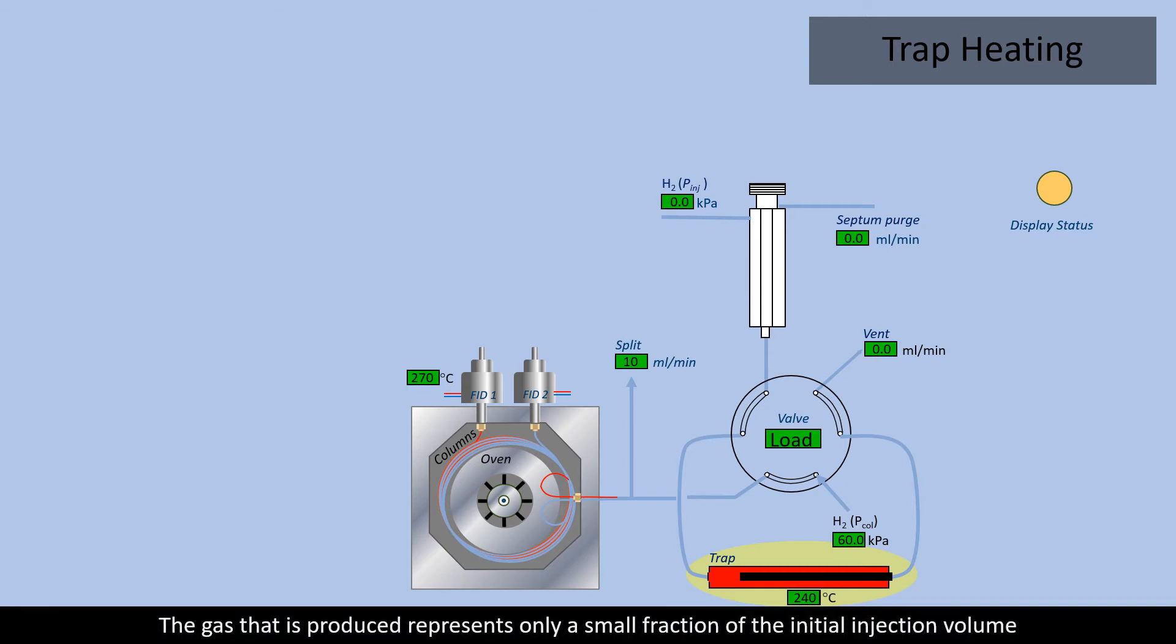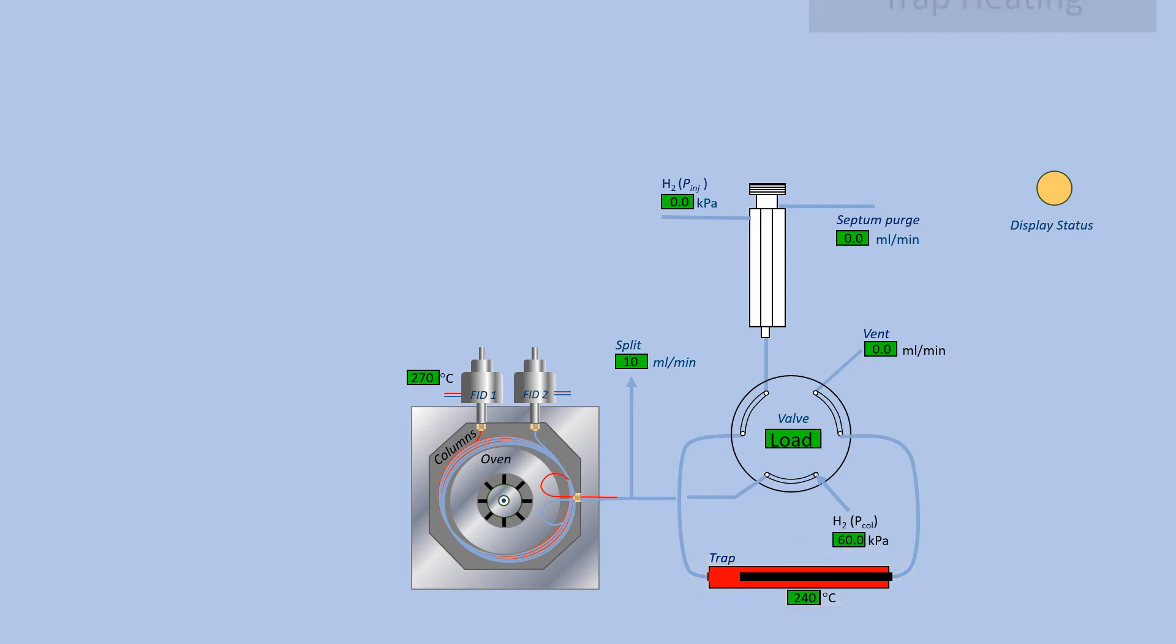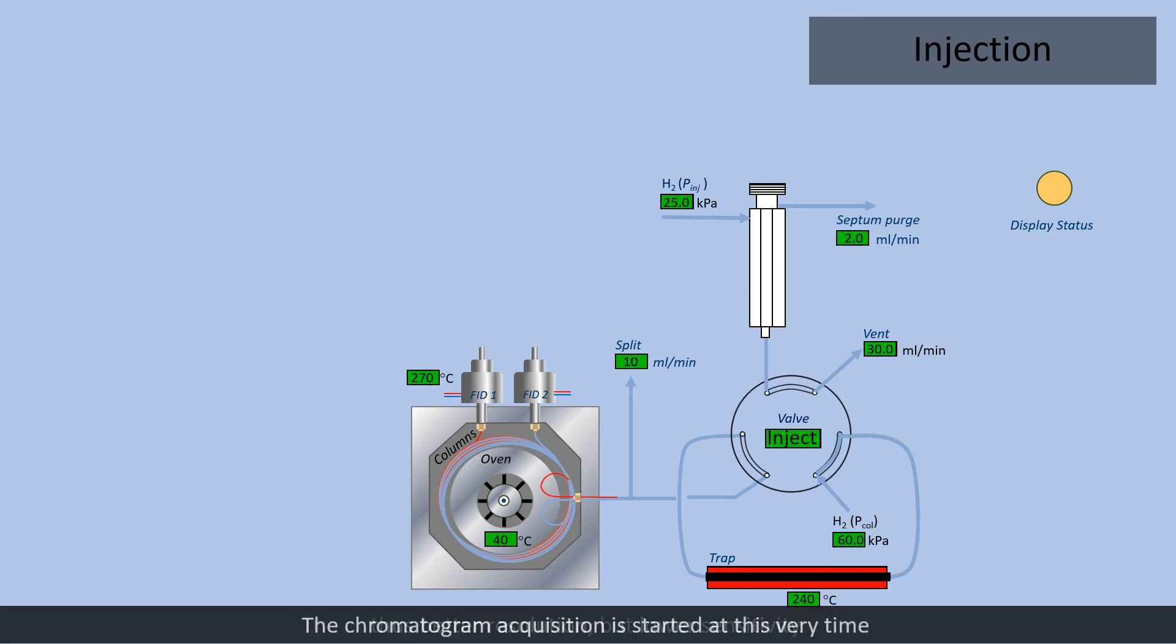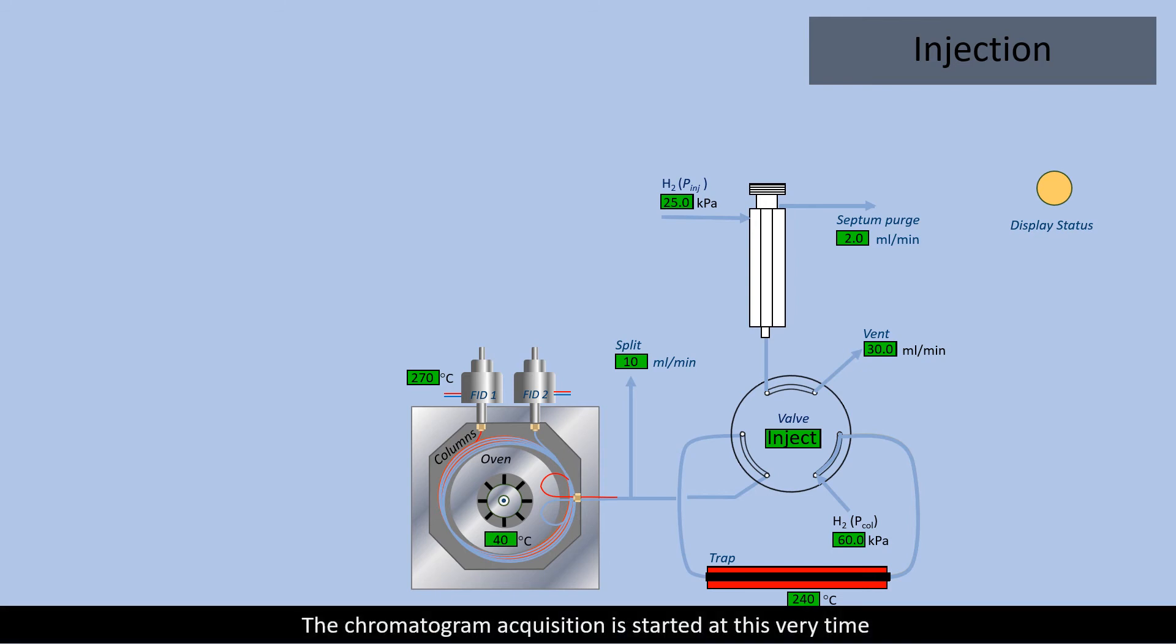The gas that is produced represents only a small fraction of the initial injection volume. Then, the heated valve is turned to inject this gas concentrate into the two columns under a flow of hydrogen. A fraction of this concentrate is directed to the split to give thinner peaks, thus better resolution but lower sensitivity. The chromatogram acquisition is started at this very time.